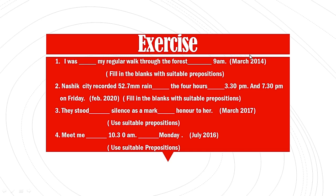Question two: Nasik city recorded 52.7 mm of rain ___ the four hours ___ three thirty P.M. and seven thirty P.M. on Friday. Fill in the blanks with suitable prepositions. The question was in February 2020.